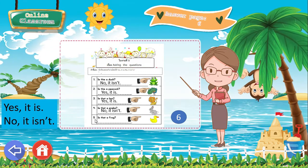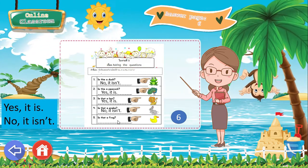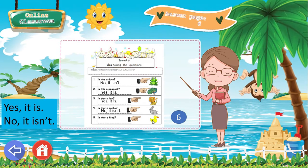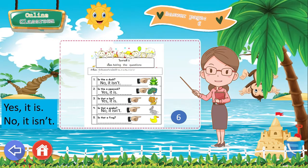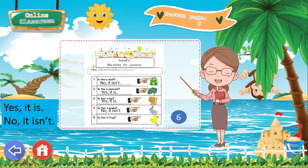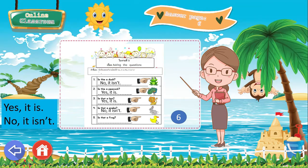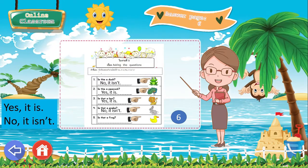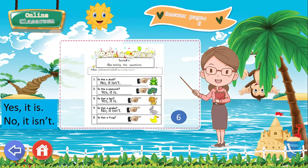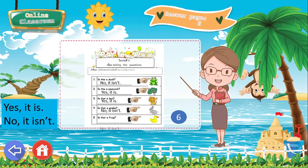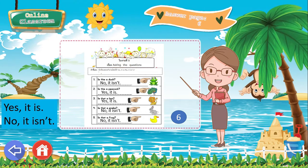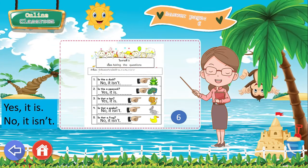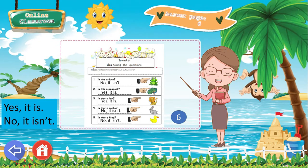Number 5: Is that a frog? What is your answer — yes, it is, or no, it isn't? The answer is: No, it isn't. Very good!